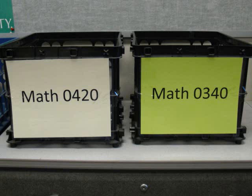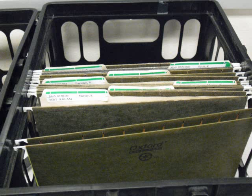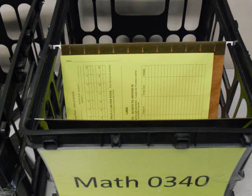Remember the Math Hub card you put your name on earlier? By the time you visit the Math Hub, it will have been filed in one of these color-coded milk crates. The milk crates are located on a table next to the sign-in computer. To find your card, look in the milk crate with your class's name on it. Inside each milk crate are several folders. Each folder contains the name of your professor and section number. Look in this folder to find your card.